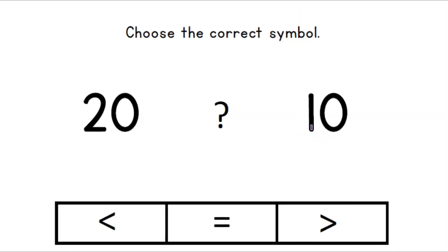Last one — are you ready? We have the number 20 and the number 10. What is the correct symbol? You can point to it on your screen. Good job, this is the correct symbol — it would sound like: 20 is greater than 10, because 20 is the biggest number.